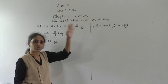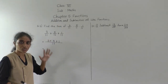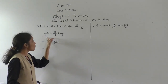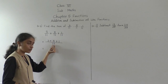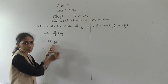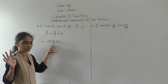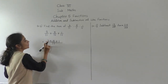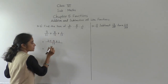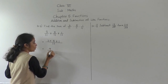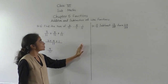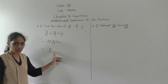Don't add the denominators — most students make this mistake. Denominators are same, so write once only, then add the numerators: 3 plus 5 plus 1. 3 plus 5 is 8, and 8 plus 1 is 9. So the answer is 9 upon 11. This is the sum of like fractions — we have learnt addition of like fractions.